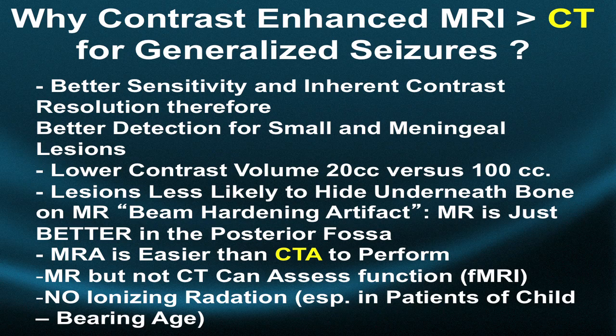MRI has better sensitivity and inherent contrast resolution, therefore better detection for small lesions and meningeal lesions. You don't have to give as much total contrast volume — the standard volume is about 20 cc for MR versus 100 cc for CT. Lesions are also less likely to hide underneath bone on MRI, which is known as beam hardening artifact on CT.